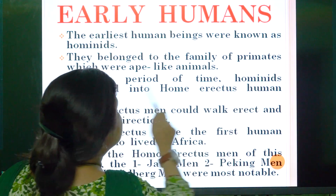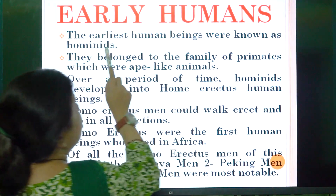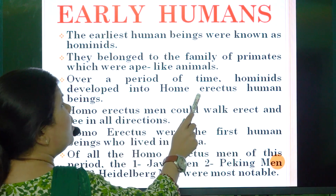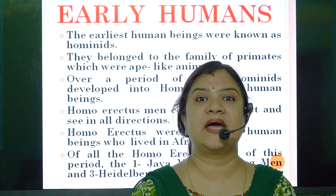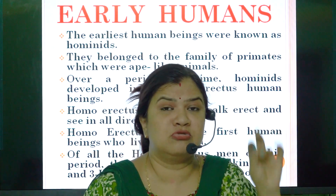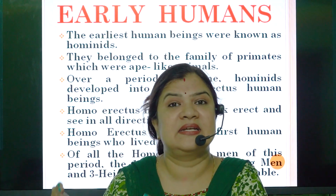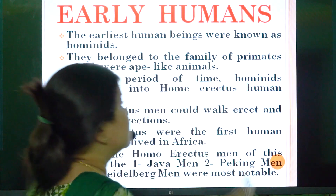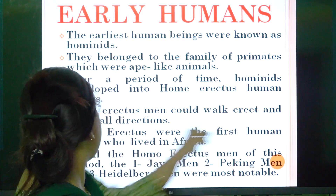Over a period of time, Hominids developed into Homo erectus. Please underline this. Erectus means straight or upright — because early man was bent forward and walked on four limbs, more like an ape. But gradually, man learned to stand straight and upright. That is the meaning of erectus.